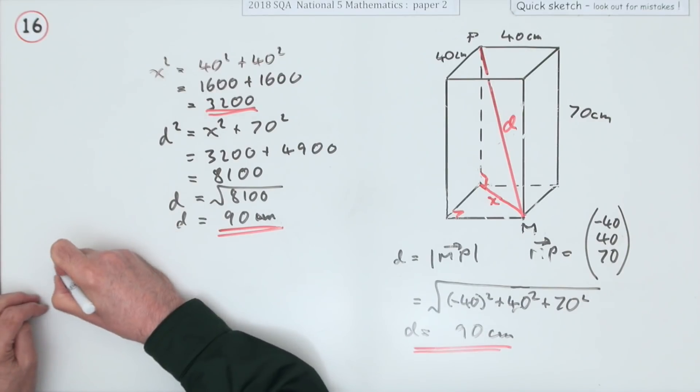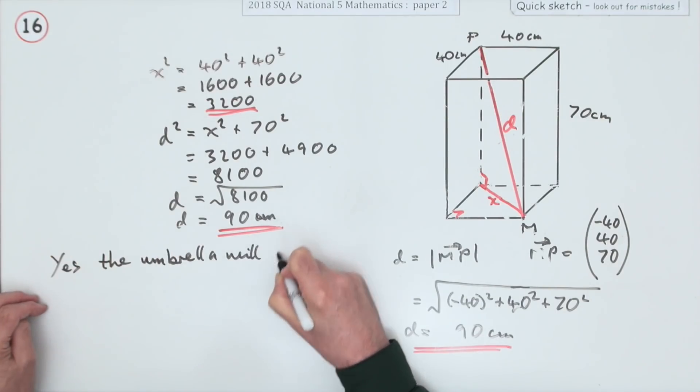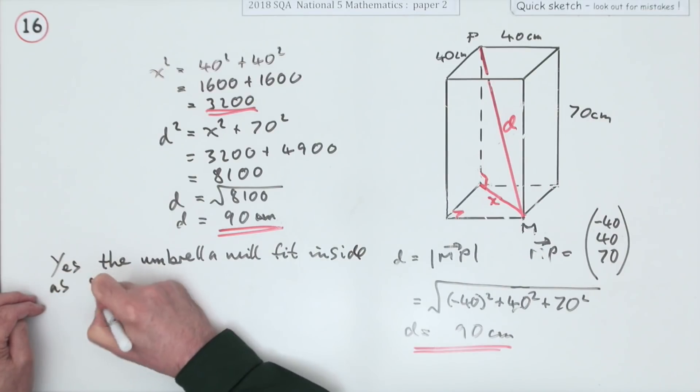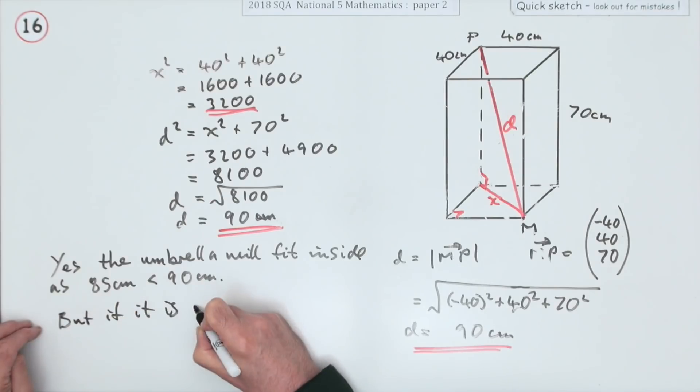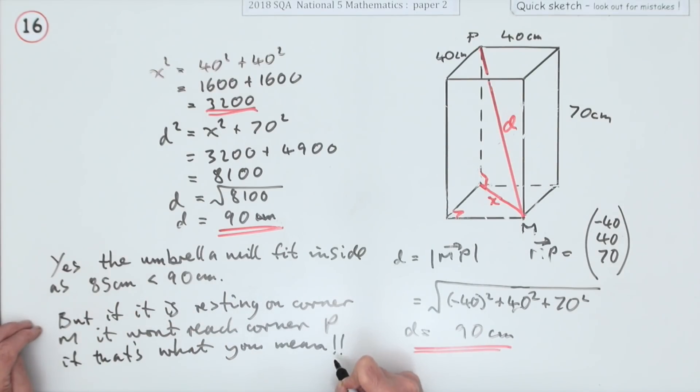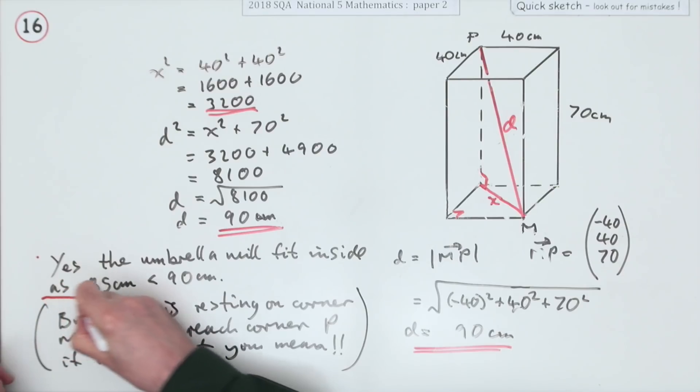So I will say this: yes, the umbrella will fit inside as 85 centimeters is less than 90 centimeters. That's what I put down the first time. But still, I see 'corner P to corner M'—but if it's resting in corner M, it won't reach corner P if that's what you mean.